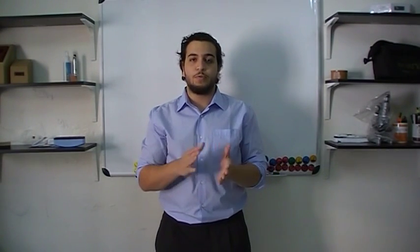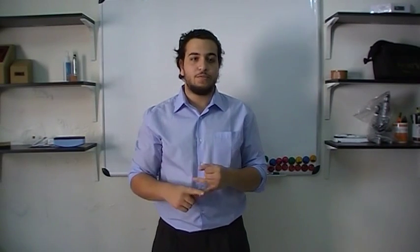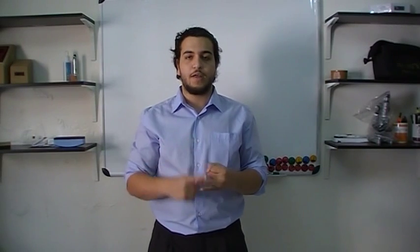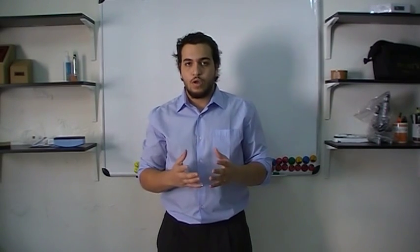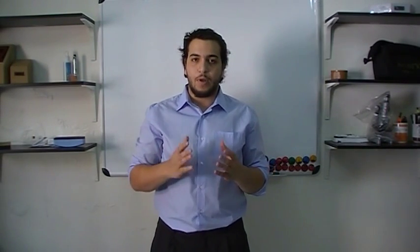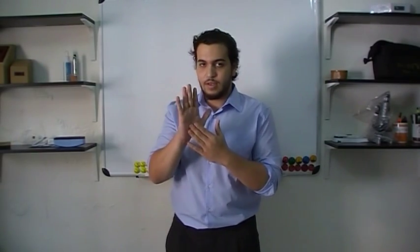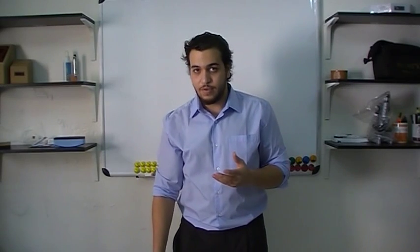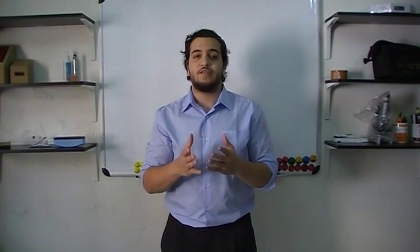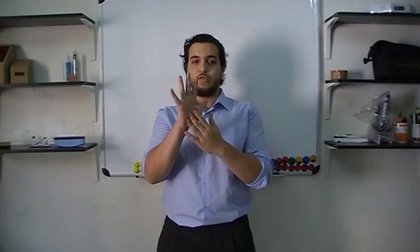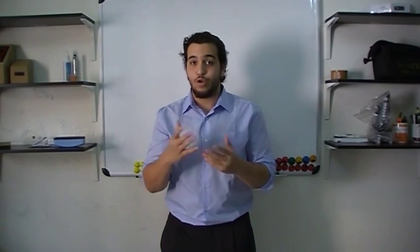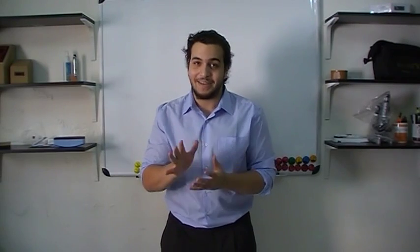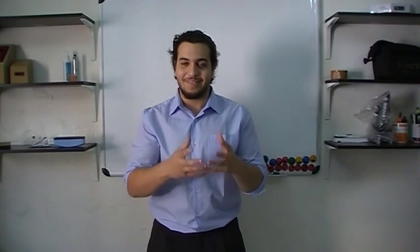The deep fascia also forms capsules, synovial membranes, and bursae in relation to joints. It also forms aponeuroses in the palms and soles — the palmar aponeurosis and the plantar aponeurosis. The palm is this part of the hand, and the sole is the equivalent on the foot — you could think of it as the palm of the leg.